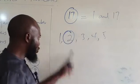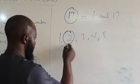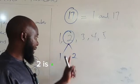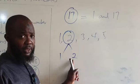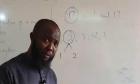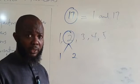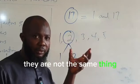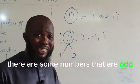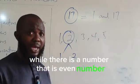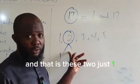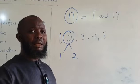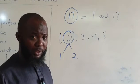Now look at 2. It has two factors: 1 and 2. So 2 is a prime number. Don't be confused between prime numbers and even numbers. 2 is both an even number and a prime number — it's the only even prime number. We also have odd numbers that are prime numbers at the same time.